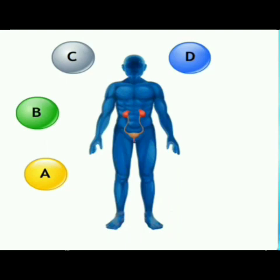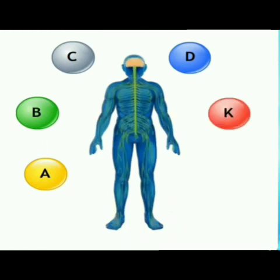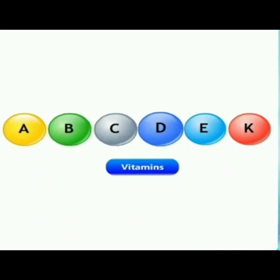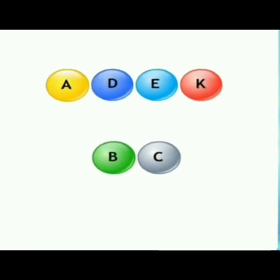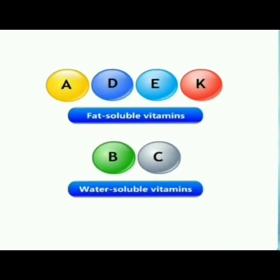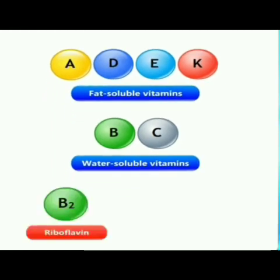Sometimes people experience difficulty seeing at night, or while eating they get mouth ulcers and cannot eat. These problems are due to lack of vitamins. Vitamins are a group of heterogeneous compounds, each of which is essential for the proper operation of various processes in the body.